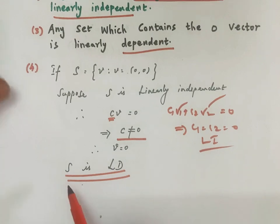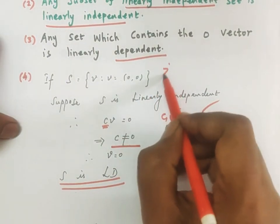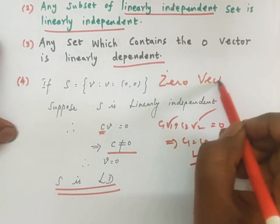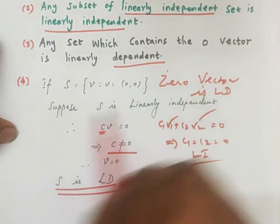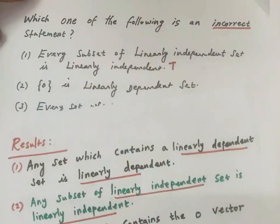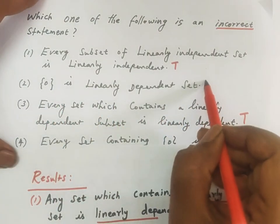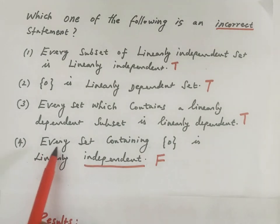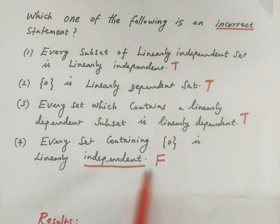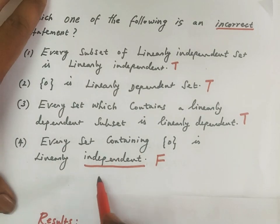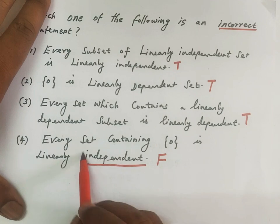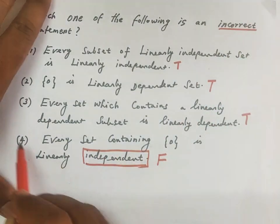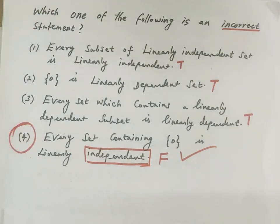So the zero vector is linearly dependent — that is true. Option 2 is a correct statement. Any set containing the zero vector is always linearly dependent — that is true. So Option 4, which says 'every set containing the zero vector is linearly independent,' is false and incorrect. Therefore Option 4 is the answer. Thanks for watching.